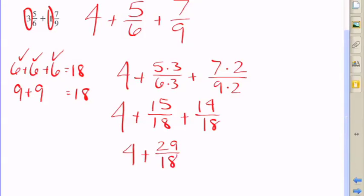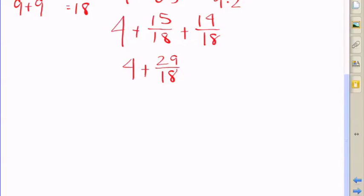So now all I have to do is add the numerators of 15 and 14, all right, add them together. You get 29, so there I have 29 eighteenths plus four.